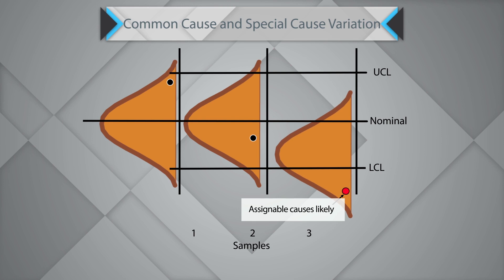If the special cause is not prevented, the process may shift towards the area where you have special cause variation. Any process variation which fits between the UCL and LCL is common cause. Whenever data exceeds the control limits, it is said to be driven by special cause variation. Root cause analysis must be conducted along with subject matter experts to understand the causality, and corrective actions must be implemented. Otherwise, the process is likely to shift towards recurrence of special cause variation.